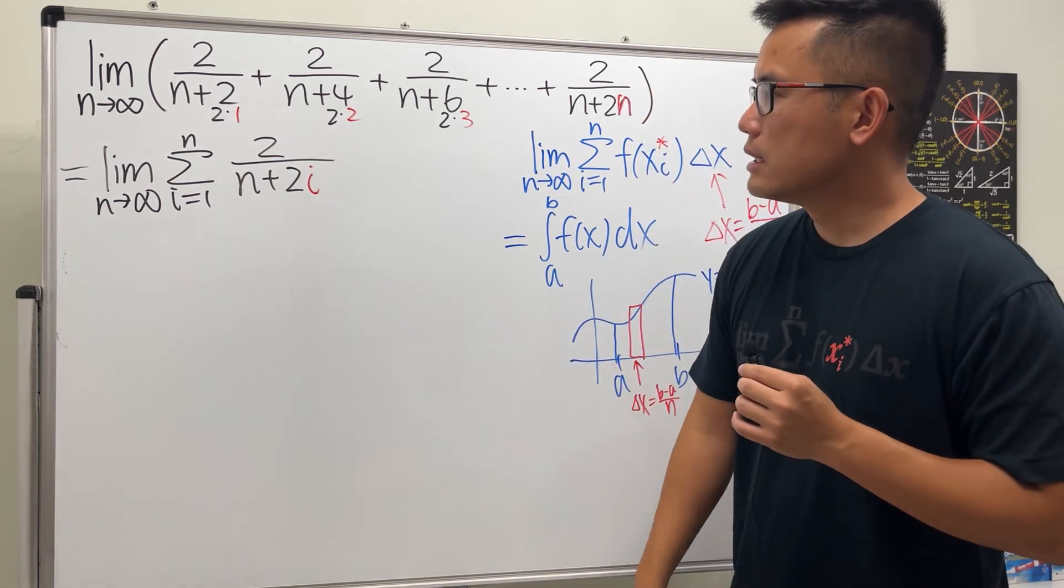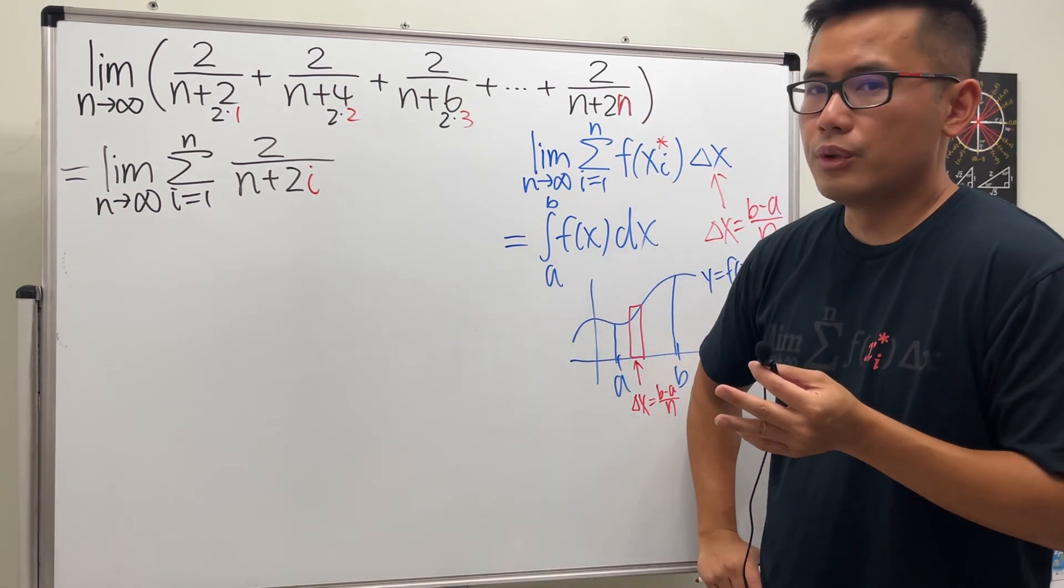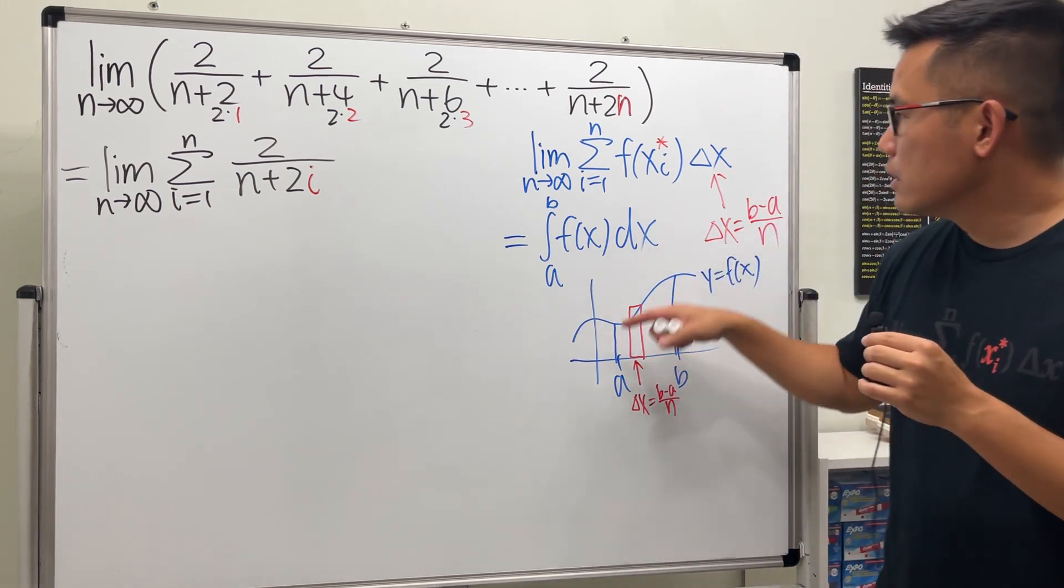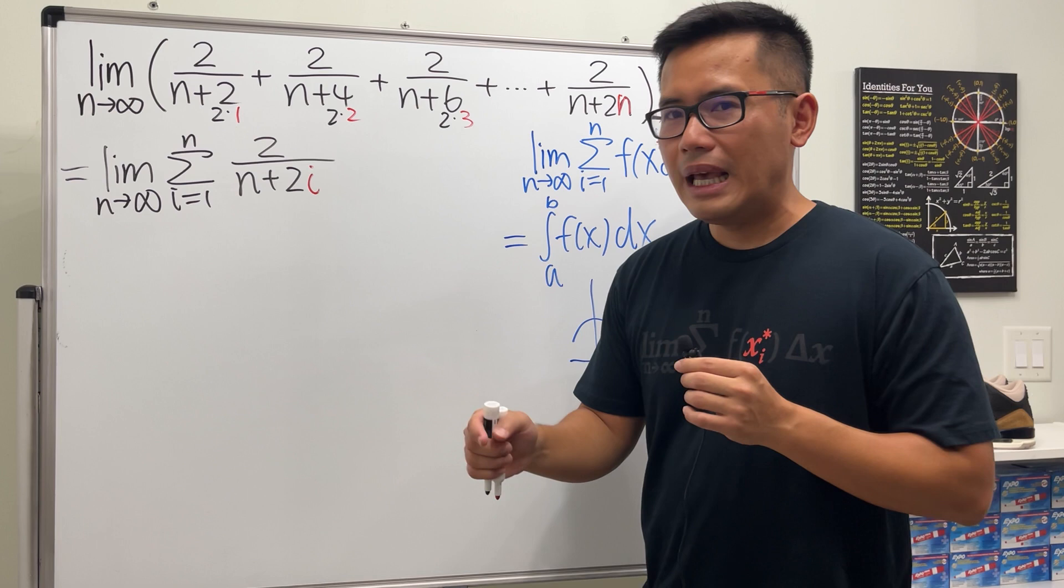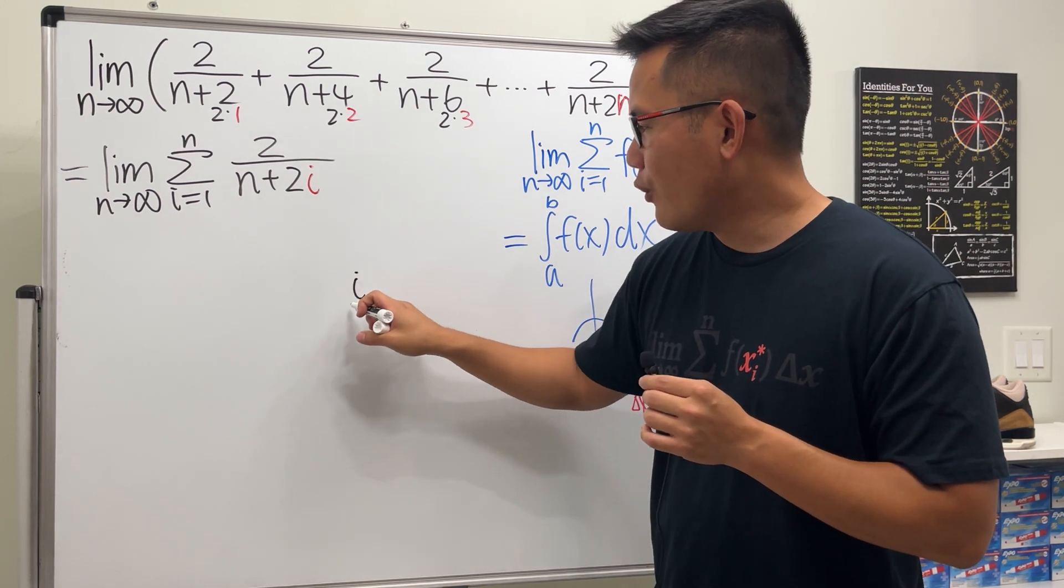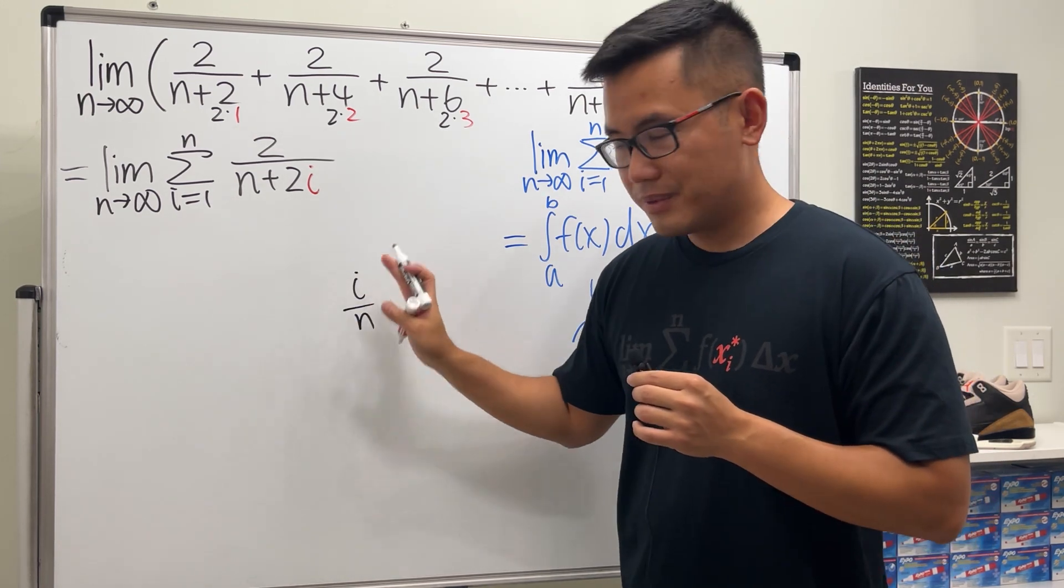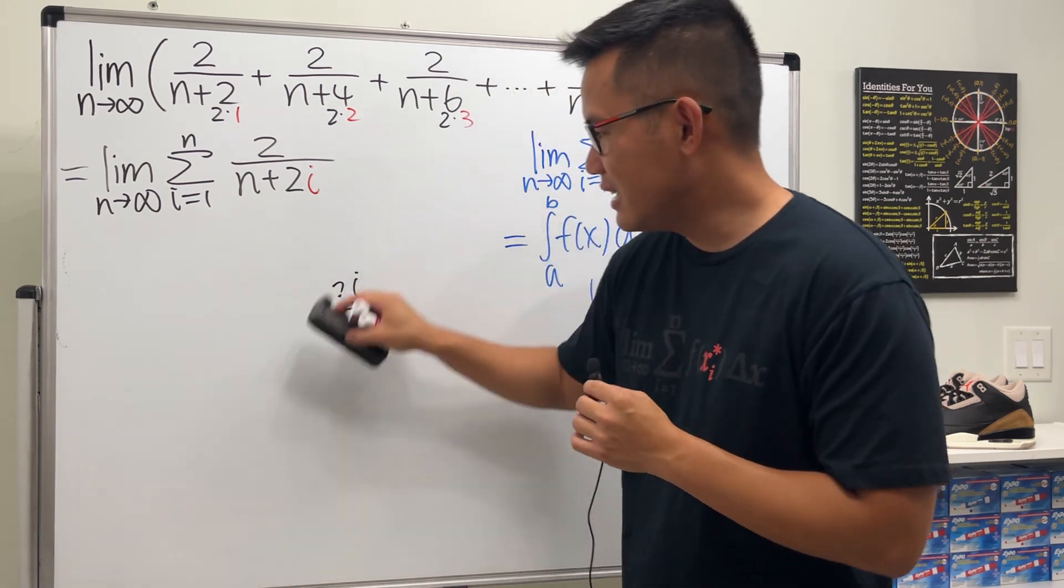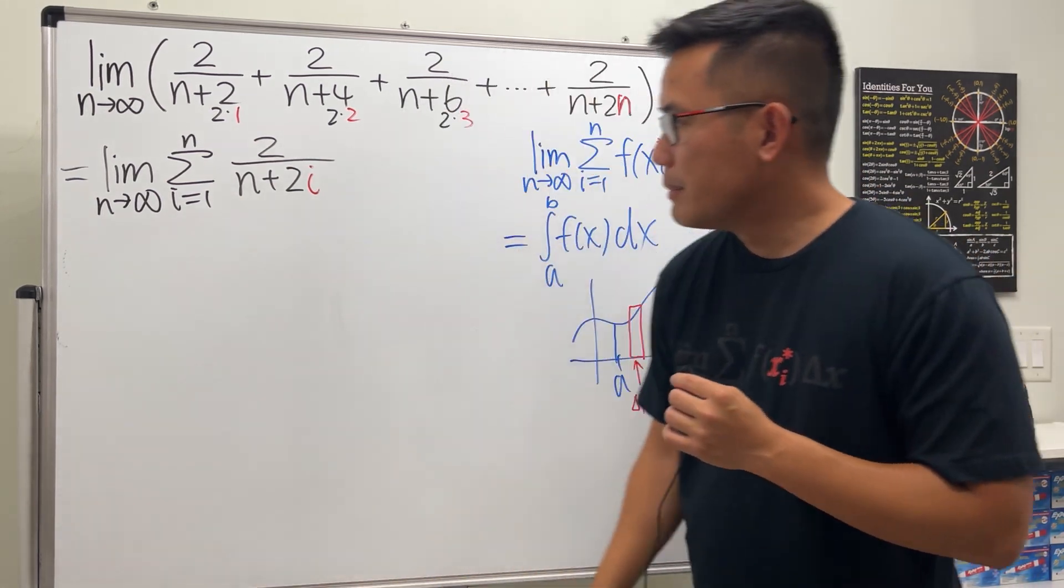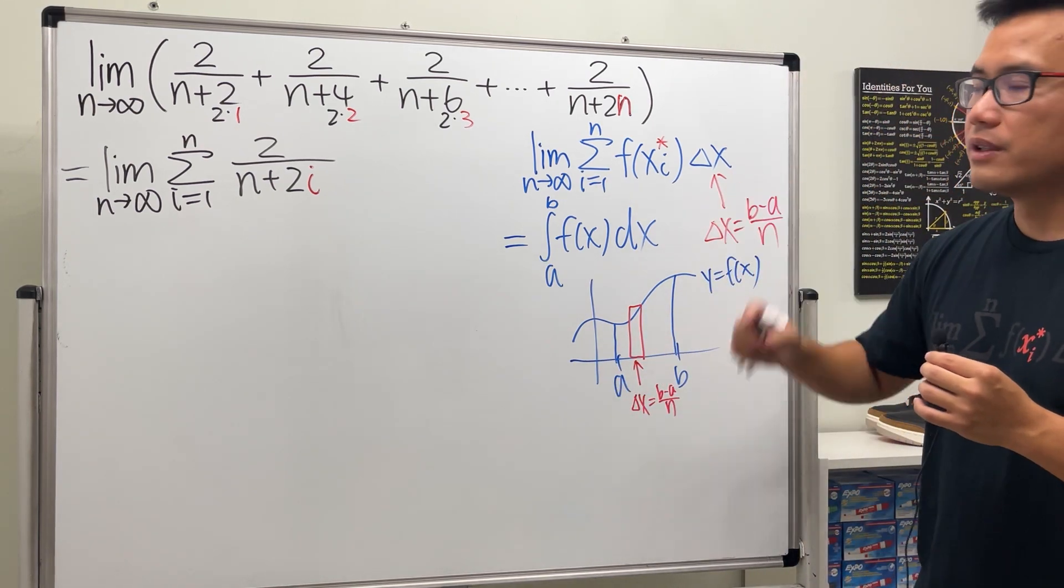That's pretty cool, but the thing is that we do not know what the function is yet. Why? Because what's the input? For the input, pay attention to the xi, meaning that you should be able to see i over n somewhere, or maybe some number in the front sometimes. So that's the hint.